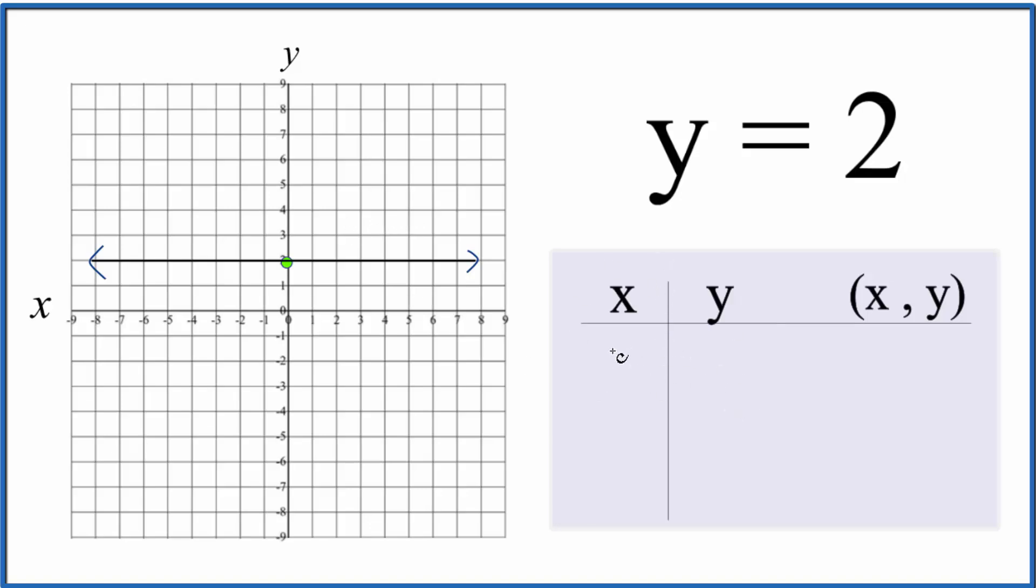So let's say x is 3, y is going to be 2. If x was 1, y would be 2. And if x were negative 5, y would be 2.